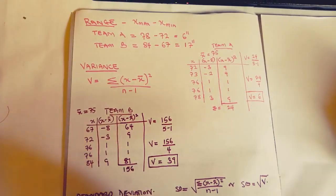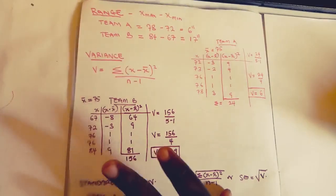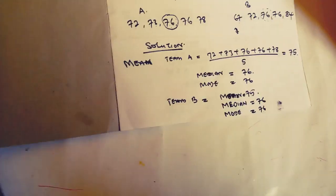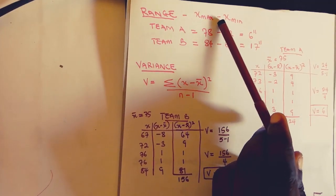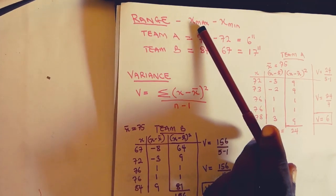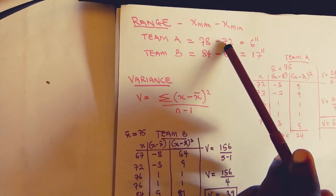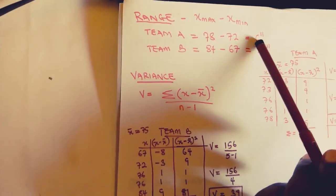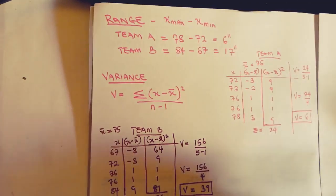Welcome back to the lesson. In the last lesson we discovered that the measures of central tendency for Team A and Team B are actually the same. Now we have the measures of variation. The first one is the range, which is X-max minus X-min, meaning the lowest number is subtracted from the highest number. For Team A, we have 78 as the highest number and 72 as the lowest, so 78 minus 72 gives us 6 inches as the range.